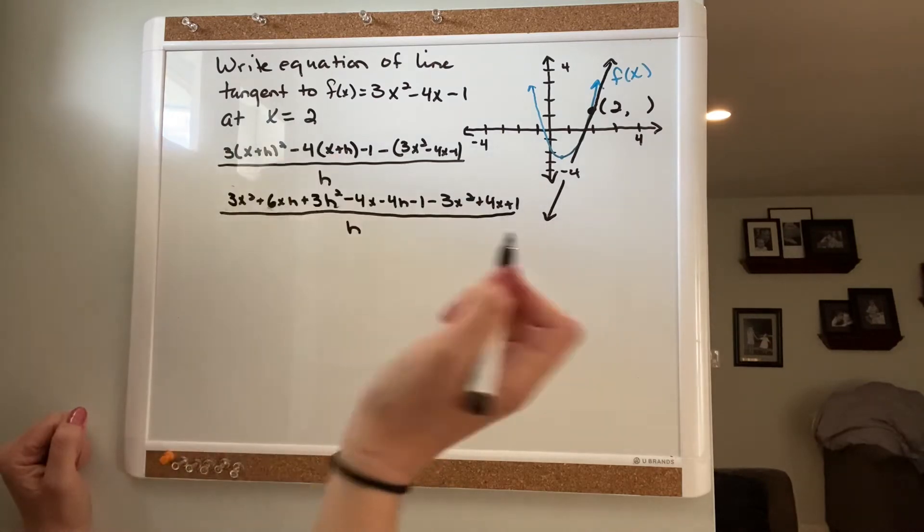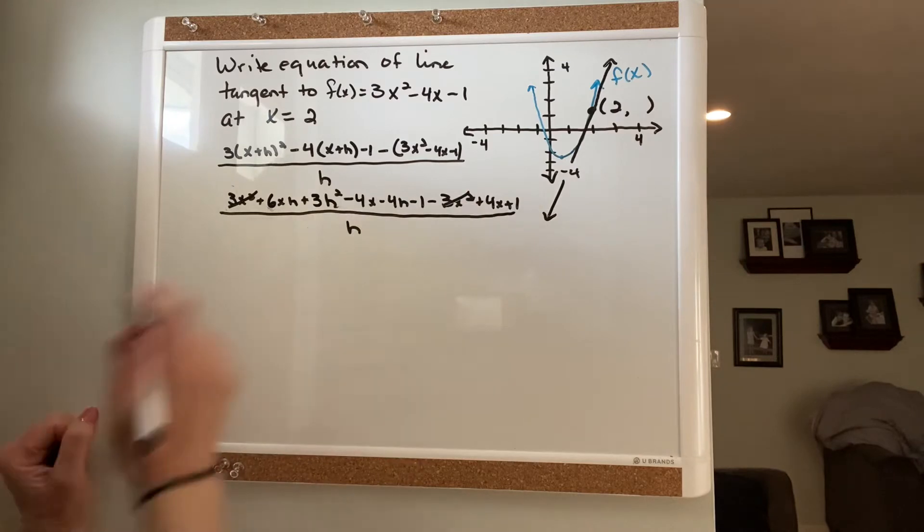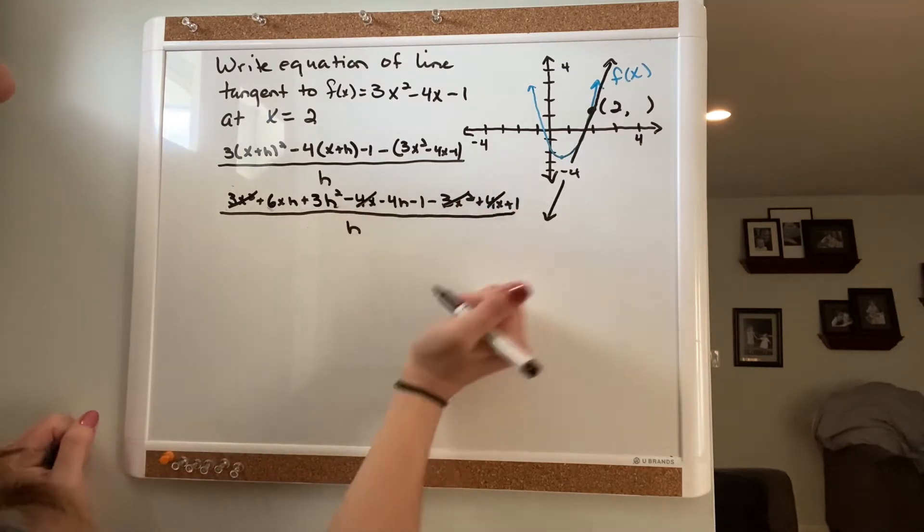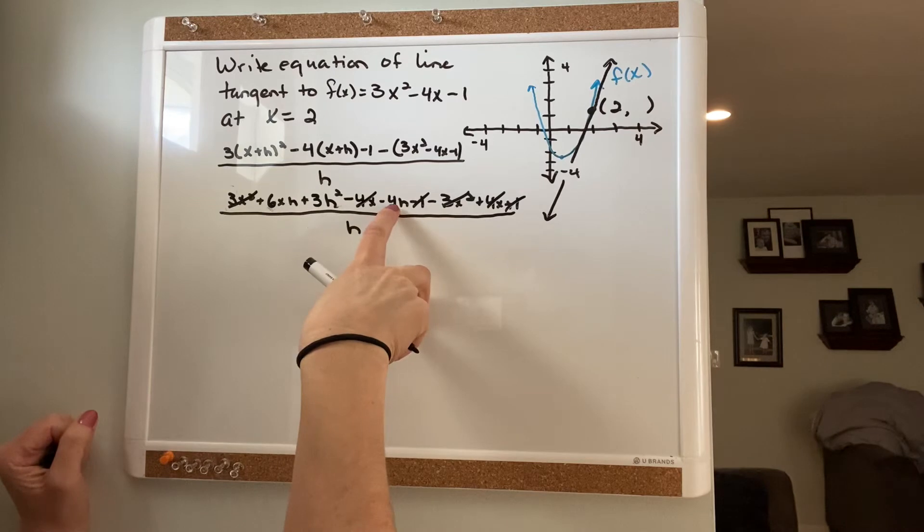And then you have to cancel all the terms that cancel each other out, so like 3x² negative 3x², negative 4x and 4x, negative 1 and 1. And you are left with 6xh plus 3h² minus 4h.